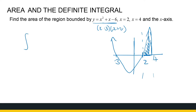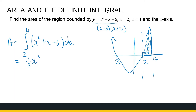That area is going to be the integral from 2 to 4 of x squared plus x minus 6 dx. That is a third x cubed plus a half x squared minus 6x, evaluated between 4 and 2. With a bit of calculator work and substitution, that should give you 38 over 3. You can check that.